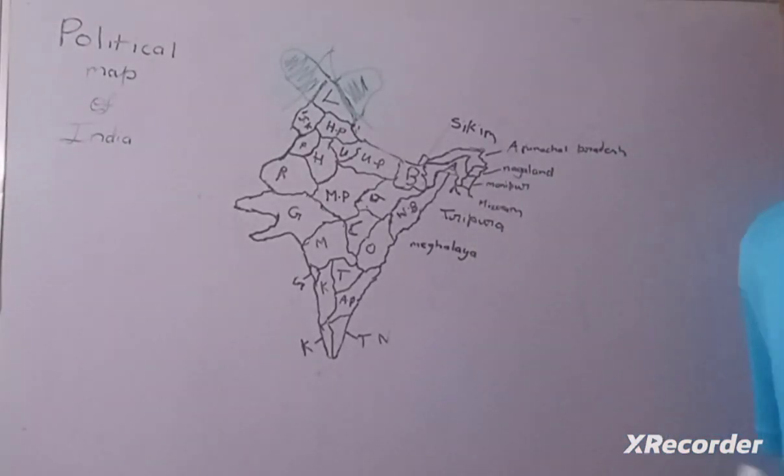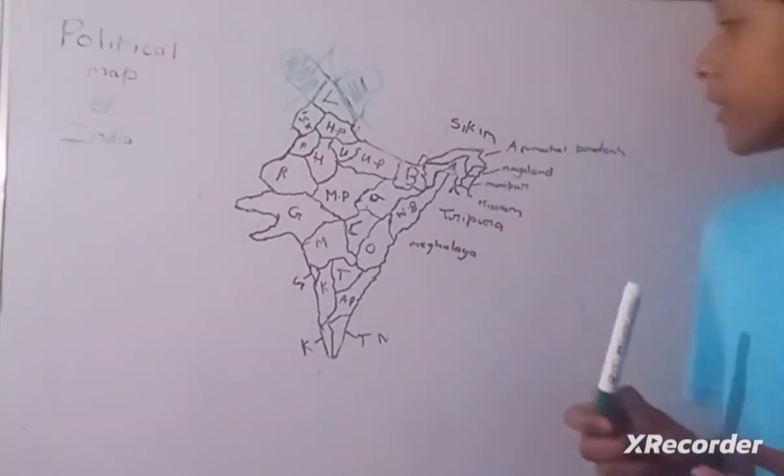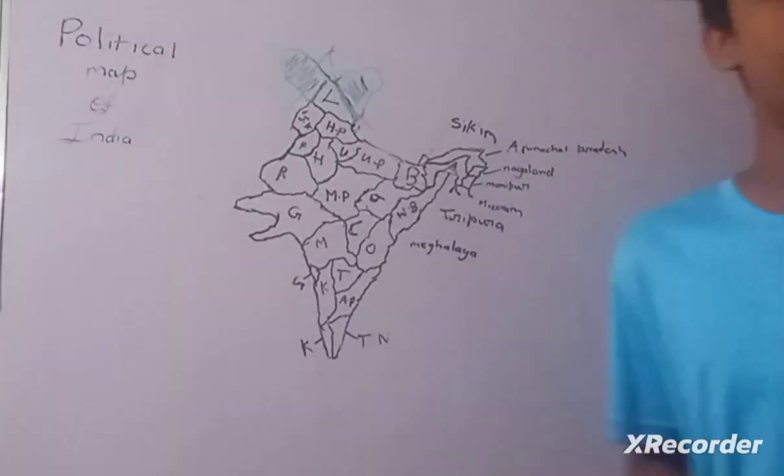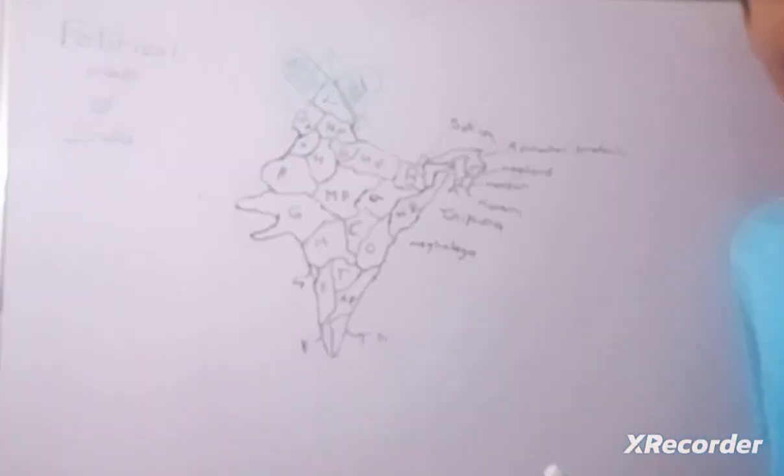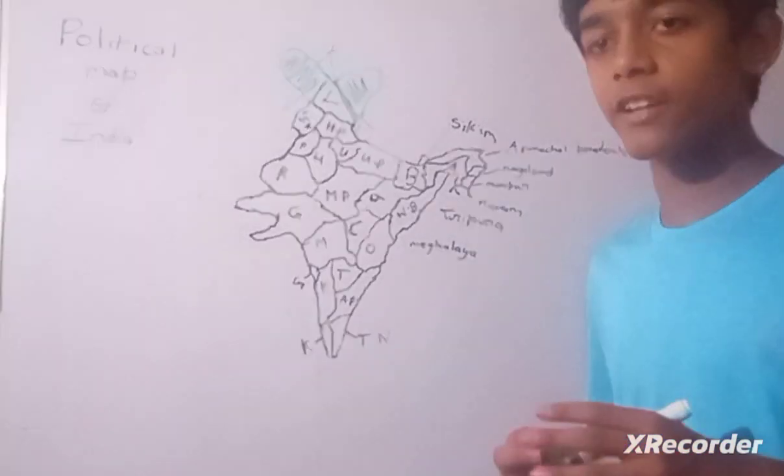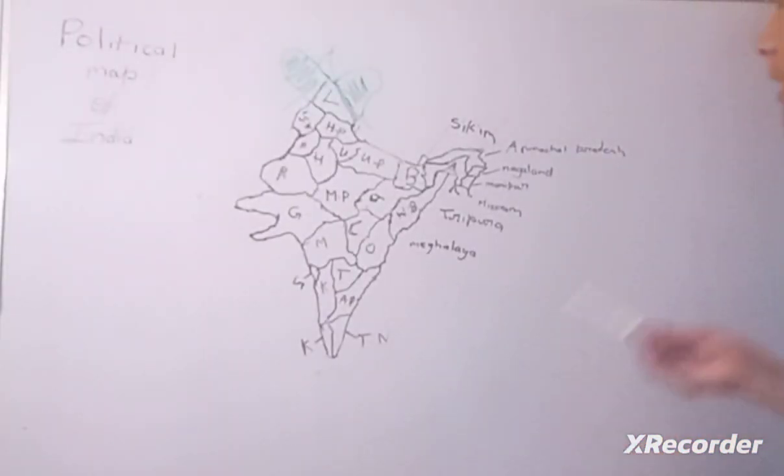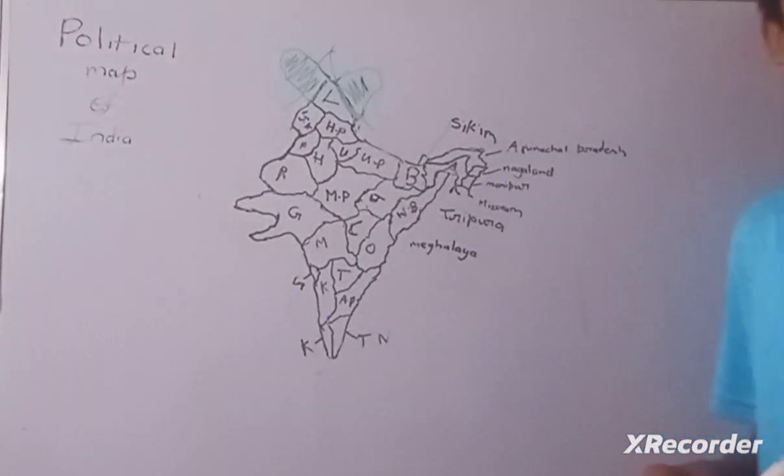Haryana. Haryana and Punjab both share the same capital, Chandigarh. Haryana is also famous for agriculture. Now Uttarakhand. Uttarakhand has the first wildlife sanctuary, Jim Corbett, and is also famous for Hindu pilgrim sites and Ganga River, and its capital is Dehradun.